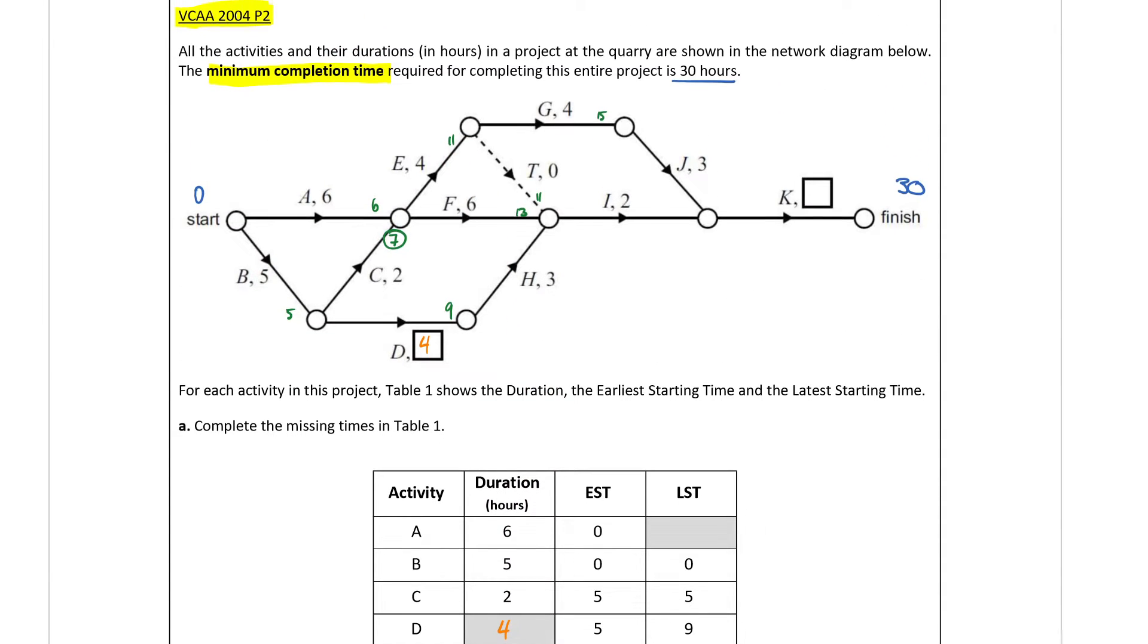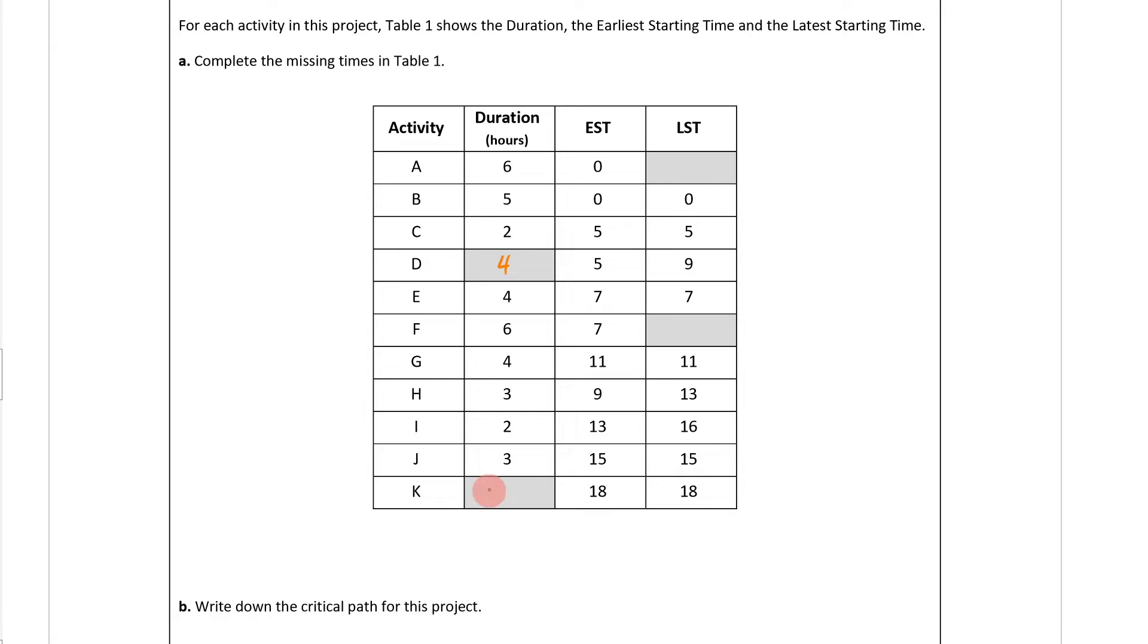Let's keep going forwards. So this is 9, and now if I go 9 plus 3, 9 plus 3 is going to be 12. 13 is the biggest. 15 plus 3 is going to be 18. And then I'm going to go 13 plus 2 is going to be 15. 18 is bigger. 18 plus what gives me 30? 18 plus 12 gives me 30. So this has to be 12 there. So the duration of K is 12. Perfect.